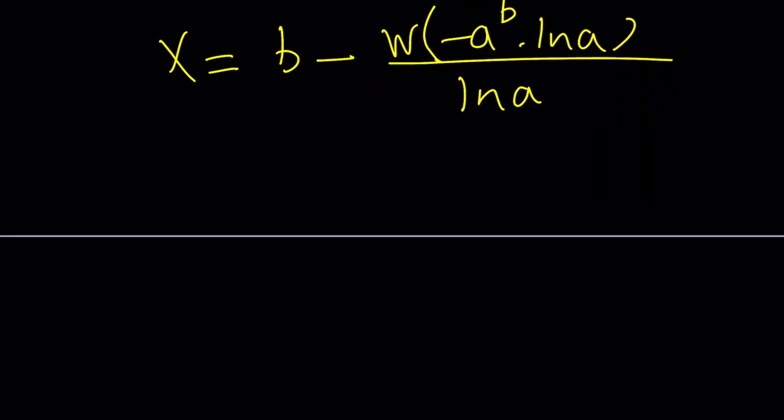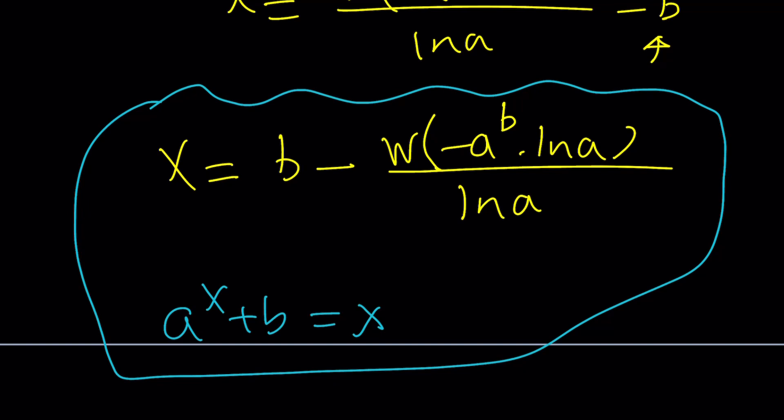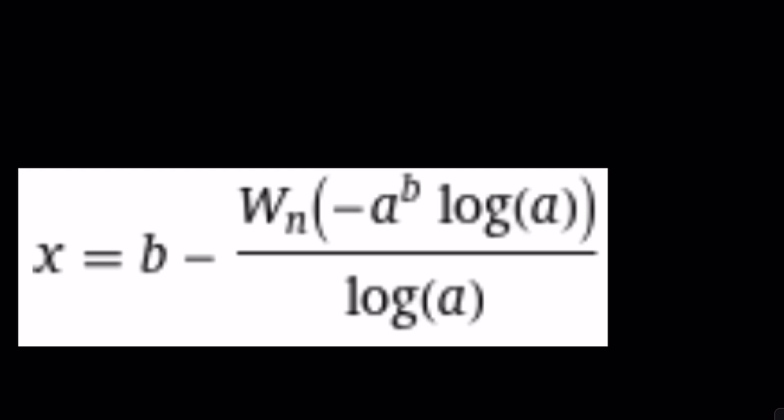Again, our original equation was a to the x plus b equals x. And this is how you can solve it in general. Now, if you wanted to apply it to certain situations, like you want to replace a and b with numbers, go ahead and do so, and you're going to get the answer. All right, let's go ahead and check what Wolfram Alpha is supposed to offer, and then we'll finish up. And Wolfram Alpha says the same thing, except it just calls ln log, unfortunately.